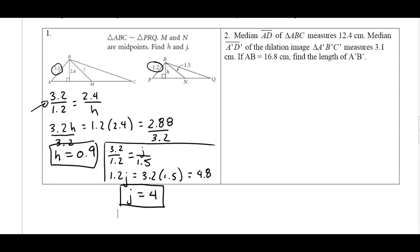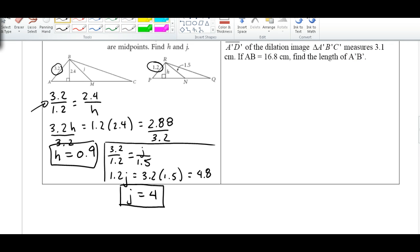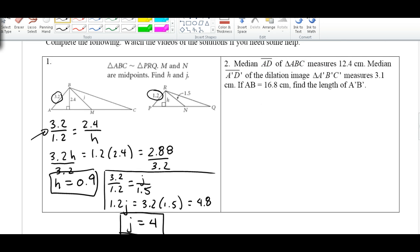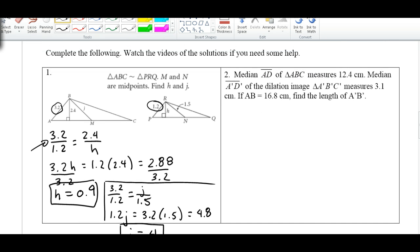This is Mr. Martin's solution to example number two in section 11.4 for corresponding parts of similar triangles. We're given that segment AD is a median of triangle ABC and measures 12.4 centimeters.